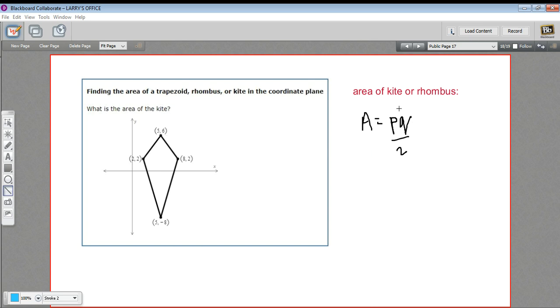What we arrived at with the rhombus was this formula that area equals the two diagonals multiplied by each other and then divided by two. The same thing holds for the kite. Area of a kite, same as the area of a rhombus. And I'll show you exactly how that works with the triangles again.